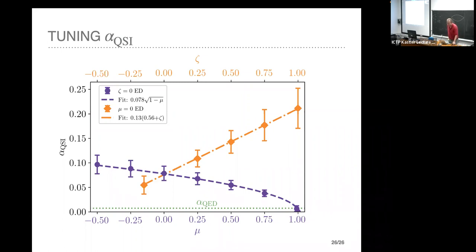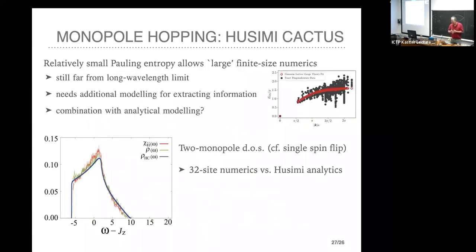I'd like to take a brief detour on a separate piece of work relating to this — the question of what actually happens to the charges. There's also the question of whether we can do simpler estimates. Here is an example where you can do a very simple calculation and get apparently reliable results compared to exact diagonalization. If you put in charges the scaling gets worse, not catastrophically worse if you only put in two charges, but you certainly can't do 96 sites. What we tried to do is use even smaller ED and come up with an effective analytical theory.